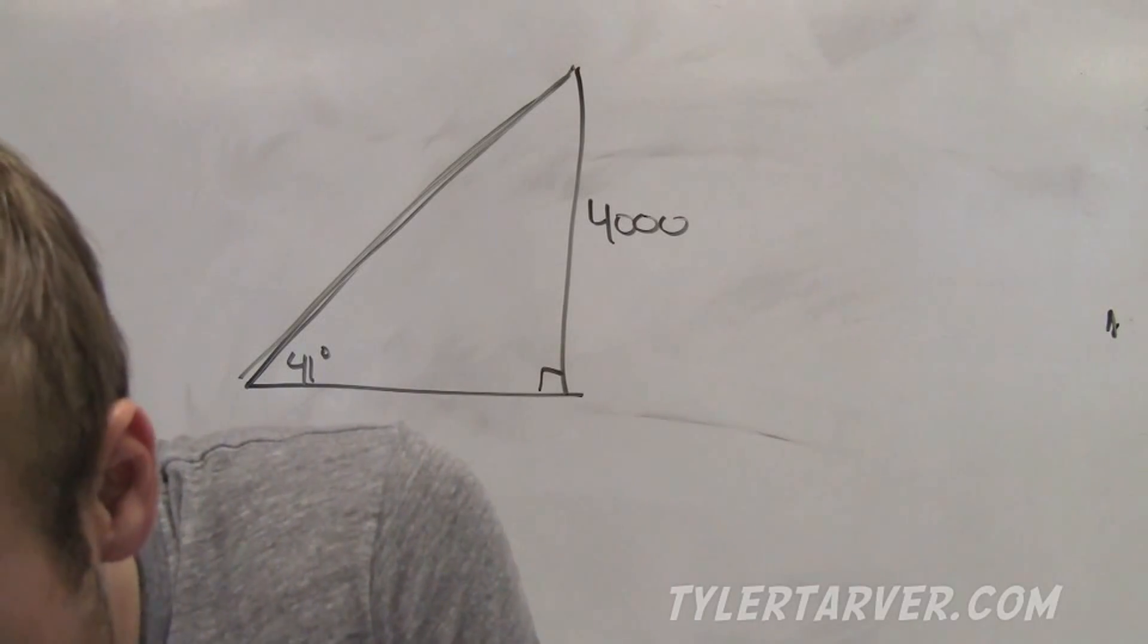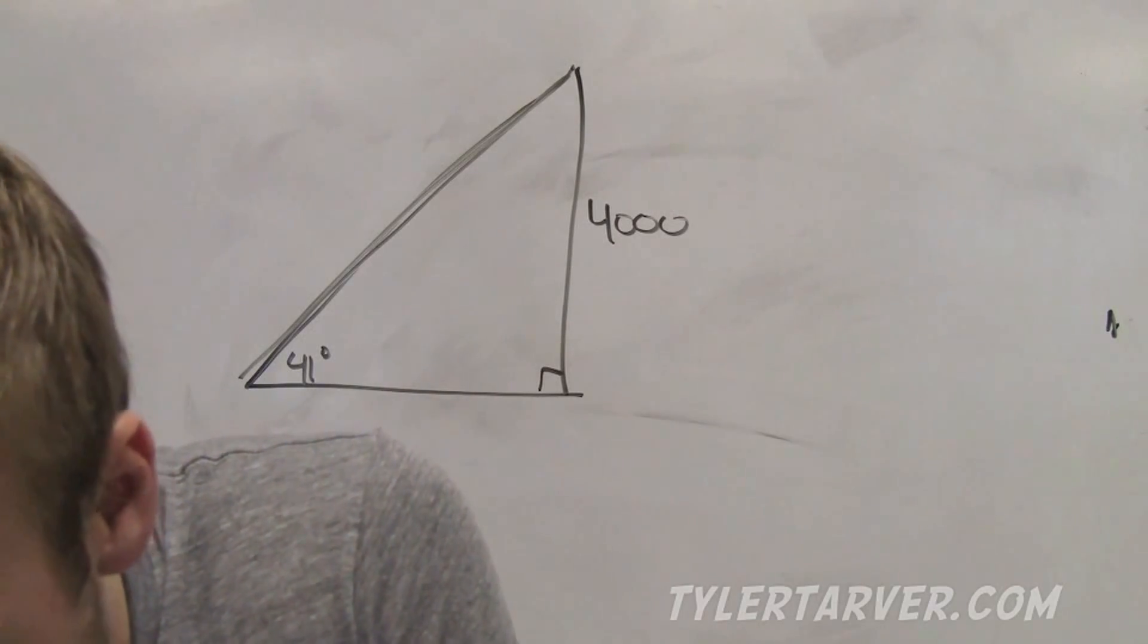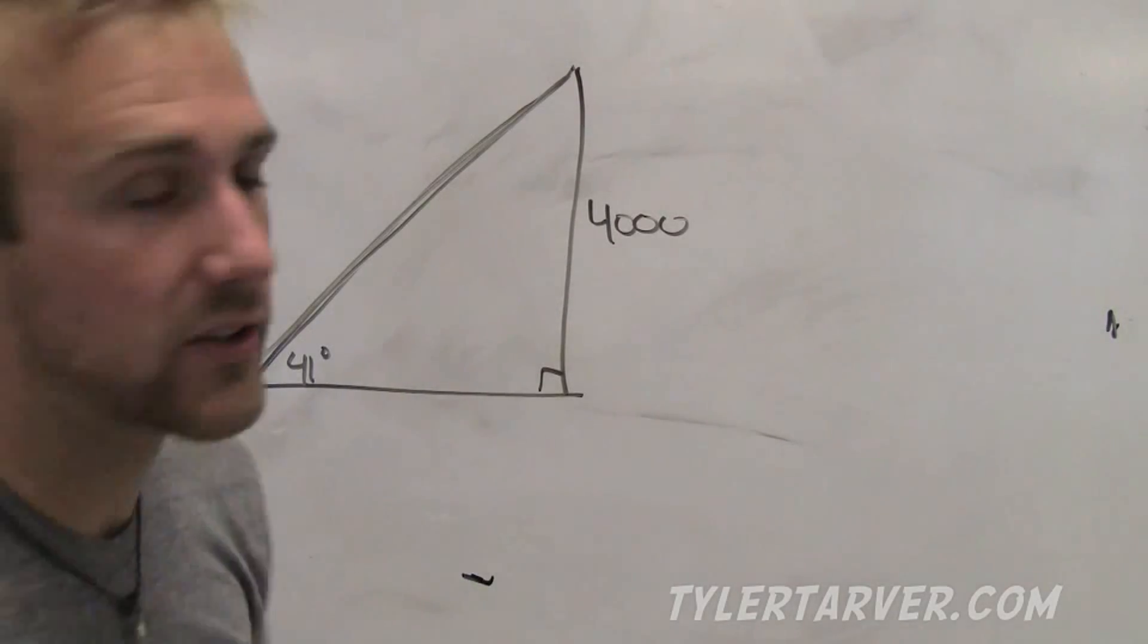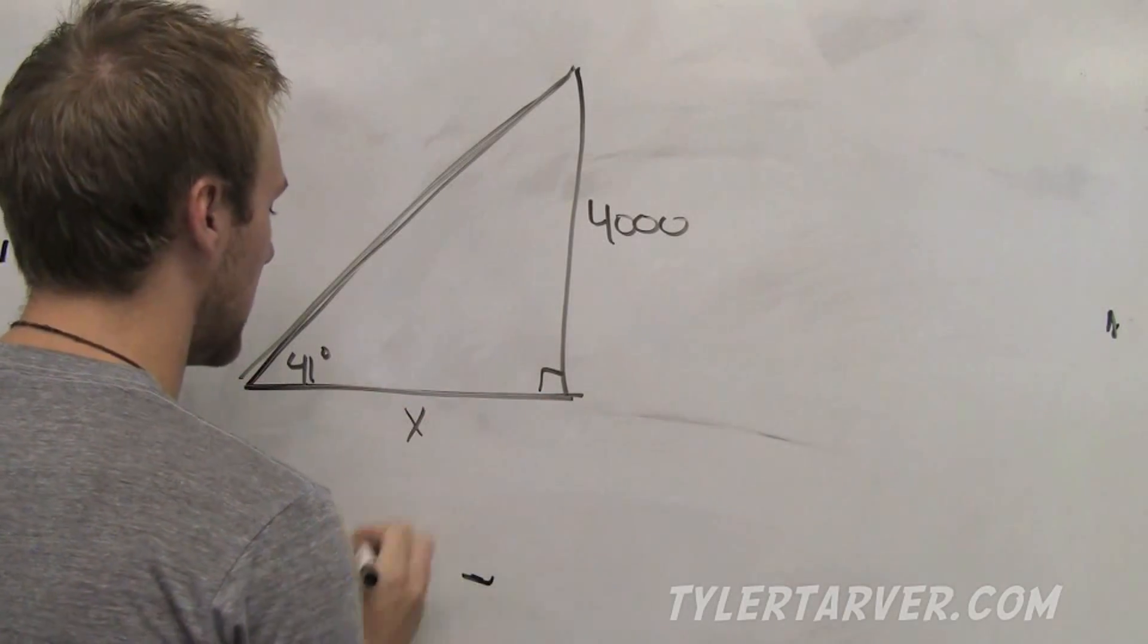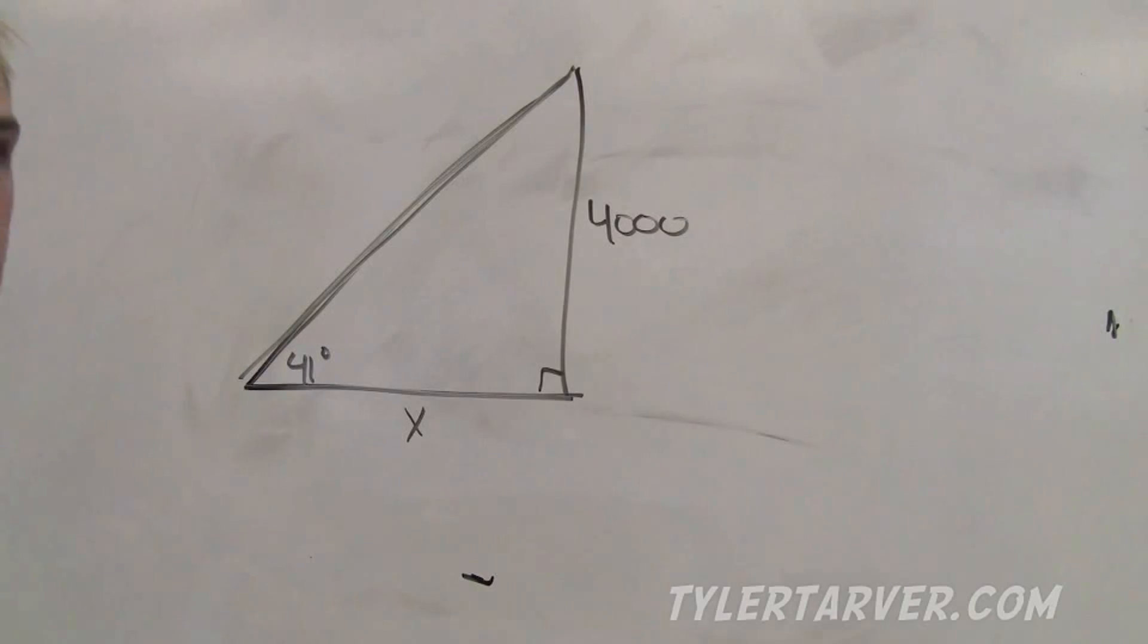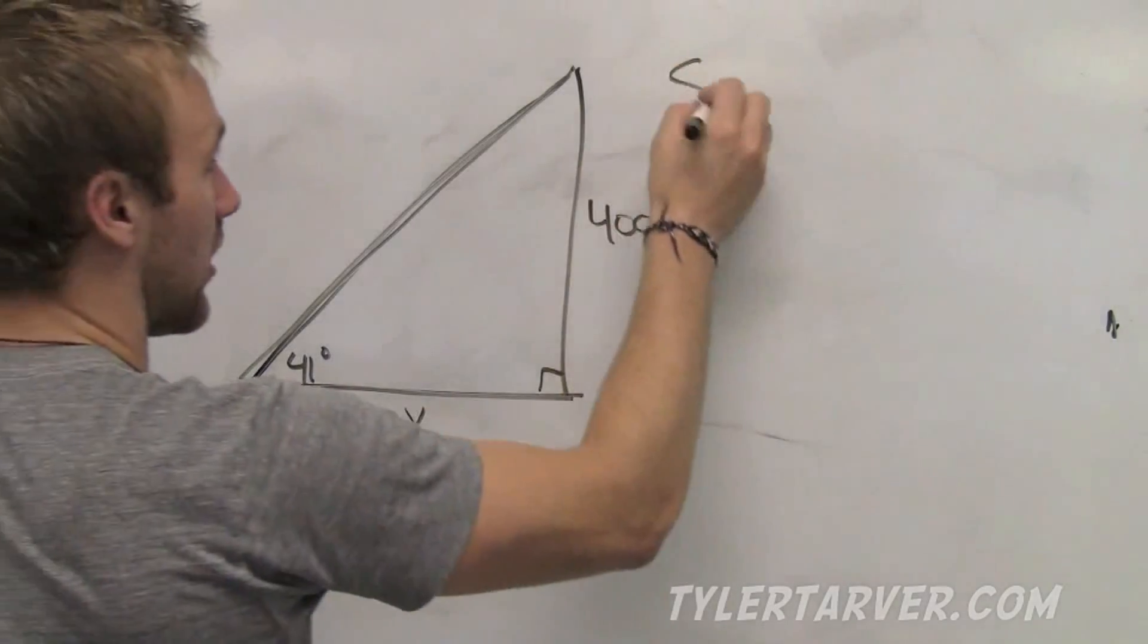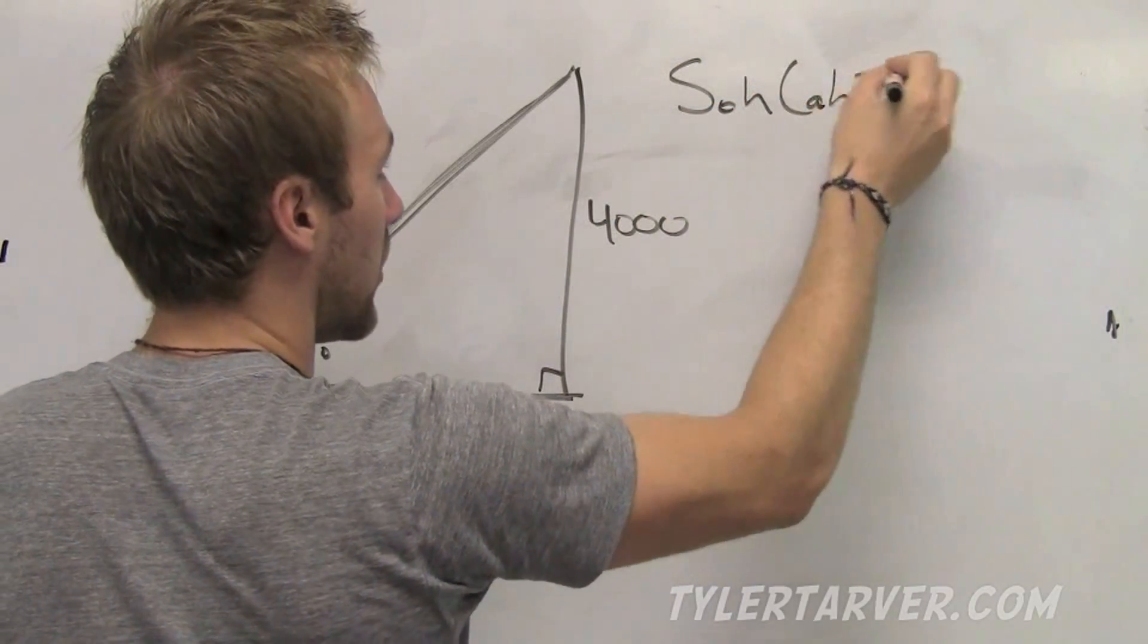What is the horizontal distance between the plane and the airport? Round to the nearest foot. Horizontal means side to side. So, we're finding this. We're going to do what we learned over the last couple sections.